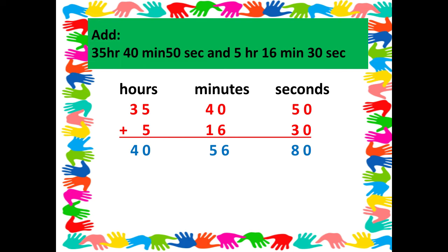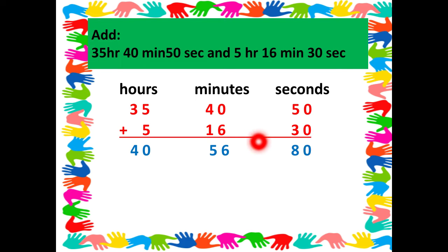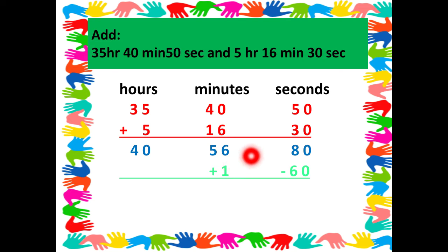Now here we have got 80 seconds. 80 is more than 60, because one minute has at maximum 60 seconds. Since this is more than 60, what we do in this step is subtract 60 from this 80 and add 1 to the minutes. So we write plus 1 under the minutes and subtract 60 from the seconds.